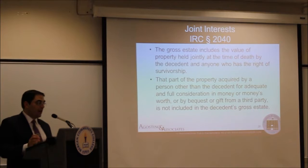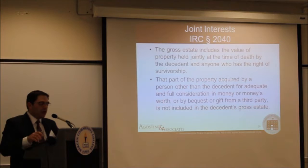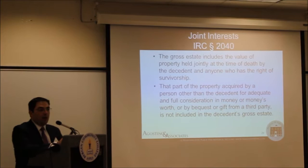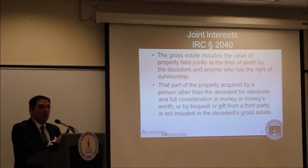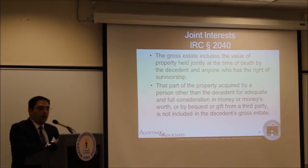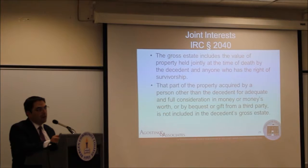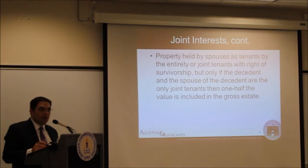Generally, when trying to establish whether property was actually transferred in jointly held property situations, it's often difficult to prove this. The IRS will typically request proof of the funding of the bank account, house, car, or whatever the jointly held property might be. And more often than not, especially if the jointly held property became jointly owned many years ago, it will be very difficult for the joint owner to prove they contributed money. So the default rule when preparing the 706 and the New Jersey estate tax return is to include the full amount of any joint interests, unless you can prove the funds came from someone other than the decedent.